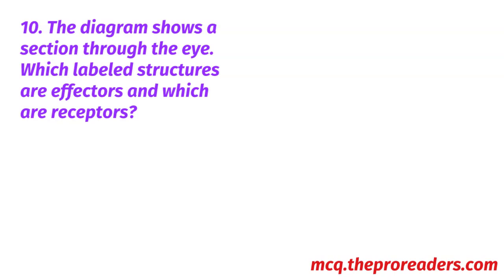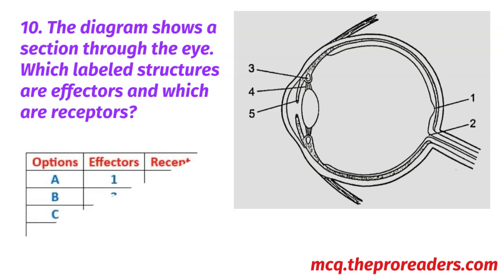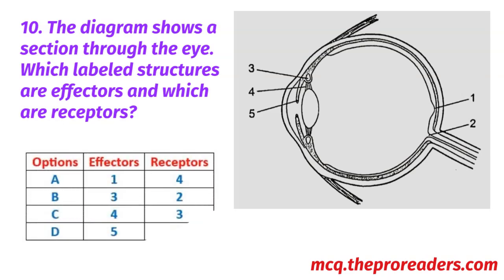The diagram shows a section through the eye. Which labeled structures are effectors and which are receptors? Options show effectors and receptors. A: 1 and 4. B: 3 and 2. C: 4 and 3. D: 5 and 1. Option D — effectors: 5, receptors: 1 — is the correct answer.